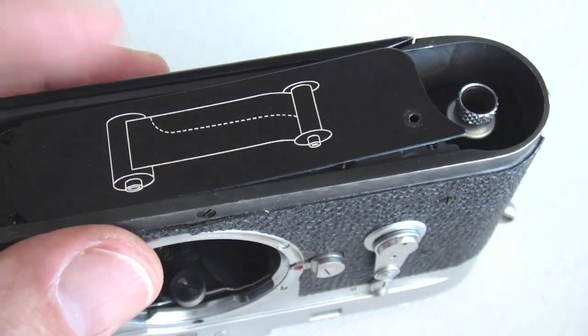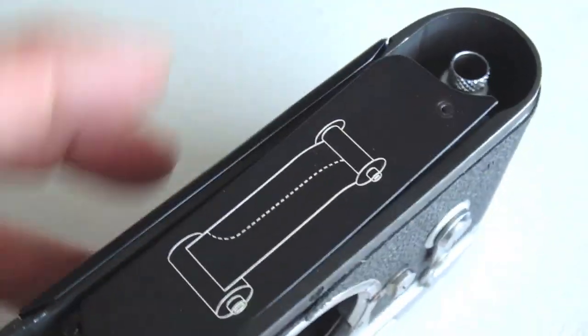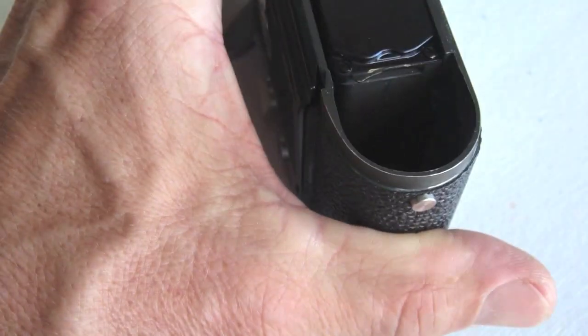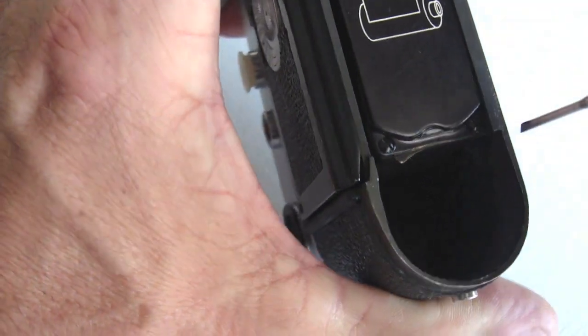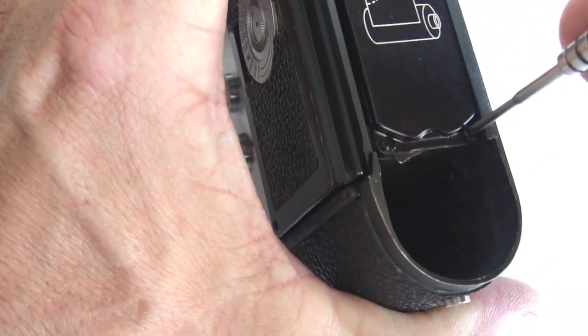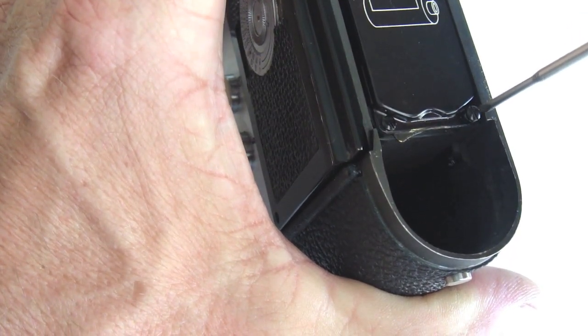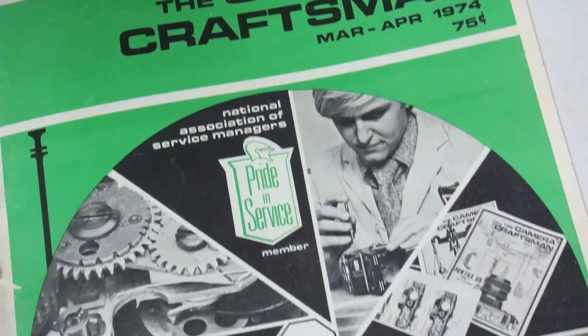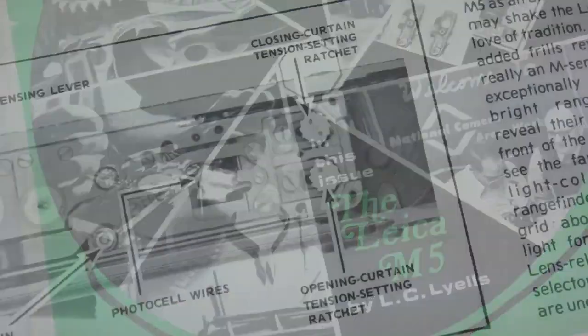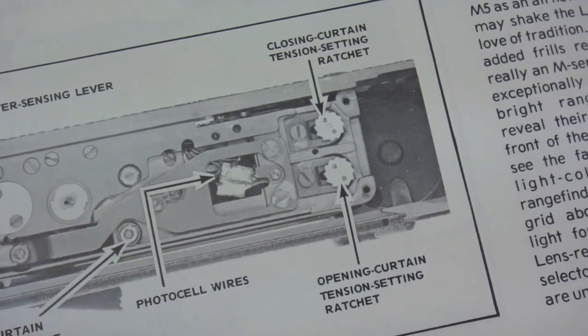This demonstration of M-Series shutter tension adjustment excludes the Leica M5, which instead uses tension setting ratchets with a locking pawl, outlined in the Camera Craftsman March-April 1974 issue.